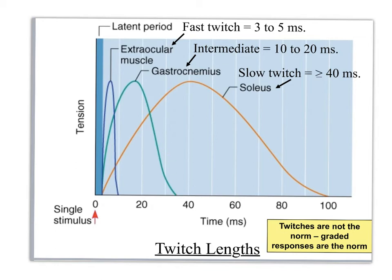Soleus takes even longer to peak and has a longer refractory period. Each of these is a single muscle twitch. This is interesting because during plantar flexion, gastrocnemius is the agonist at first, but if you hold it for more than about 20 milliseconds, soleus takes over as the agonist.